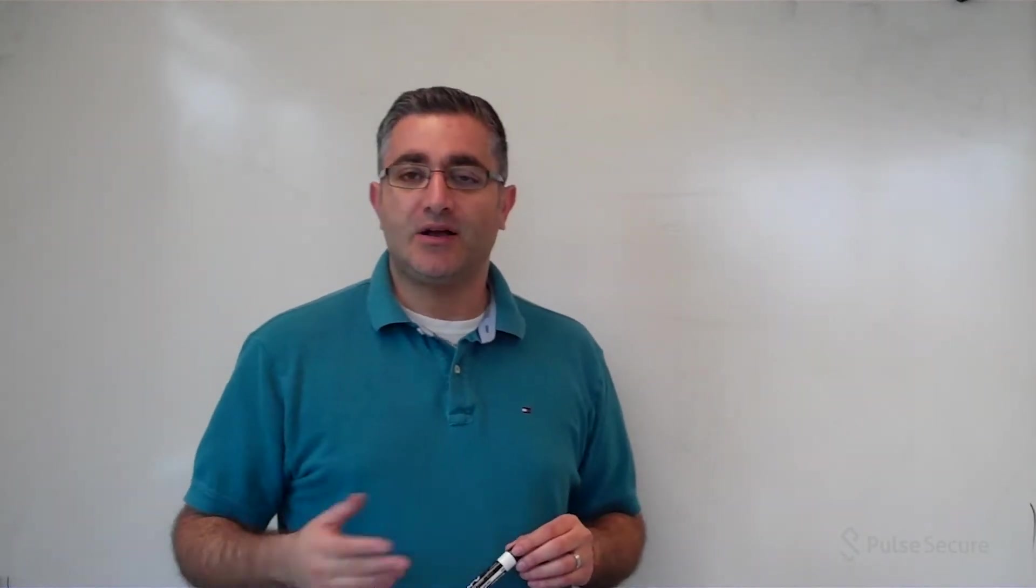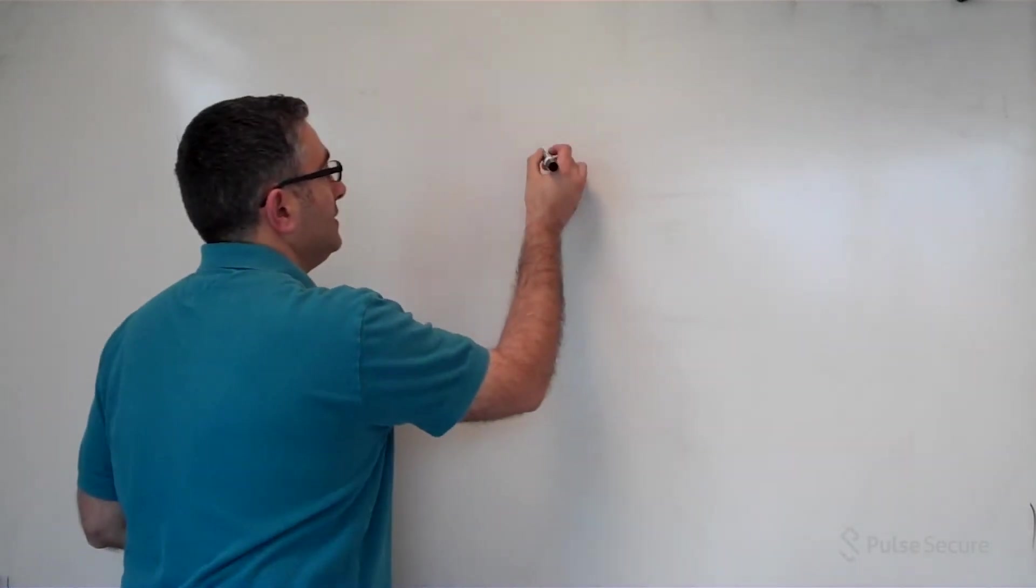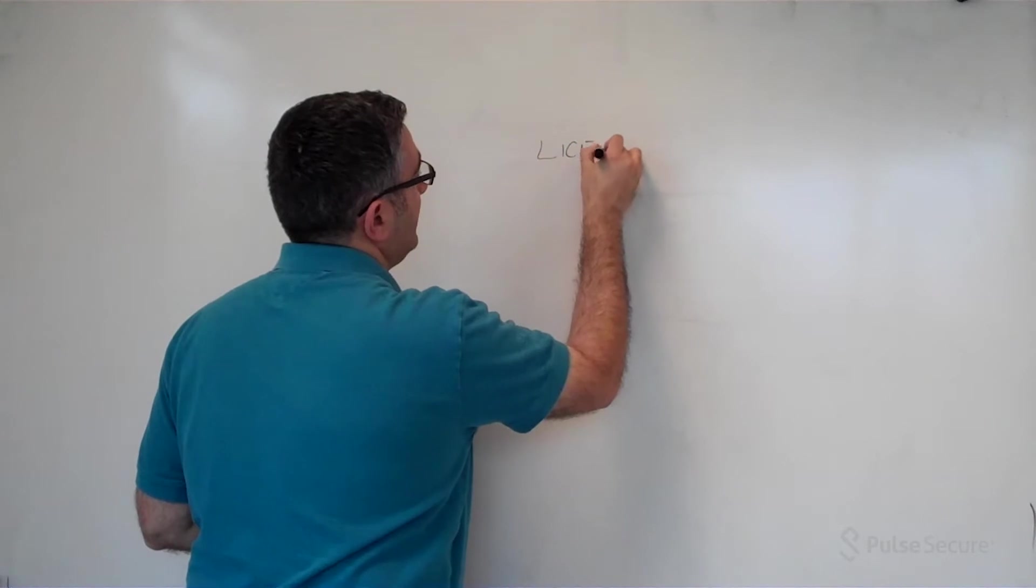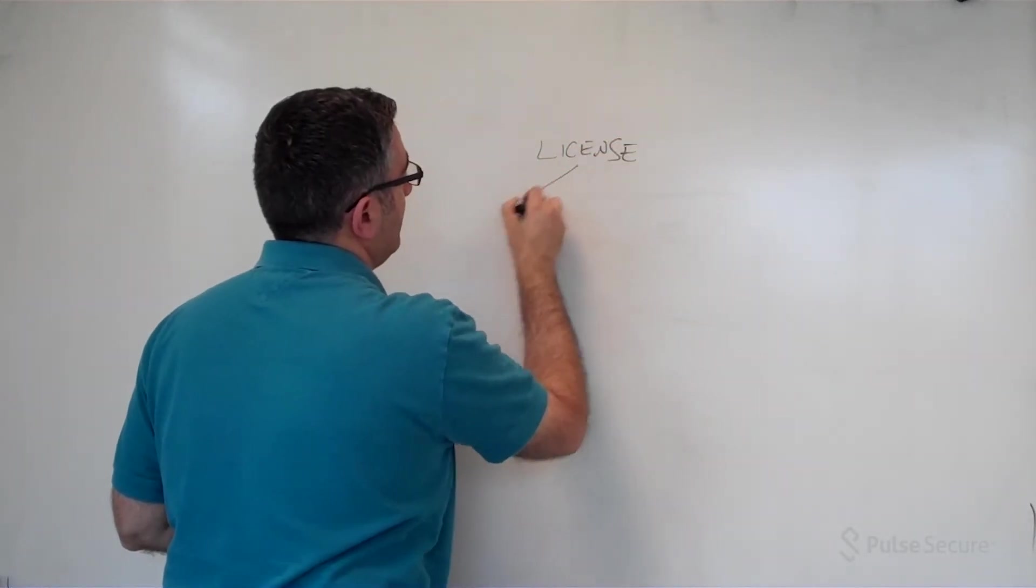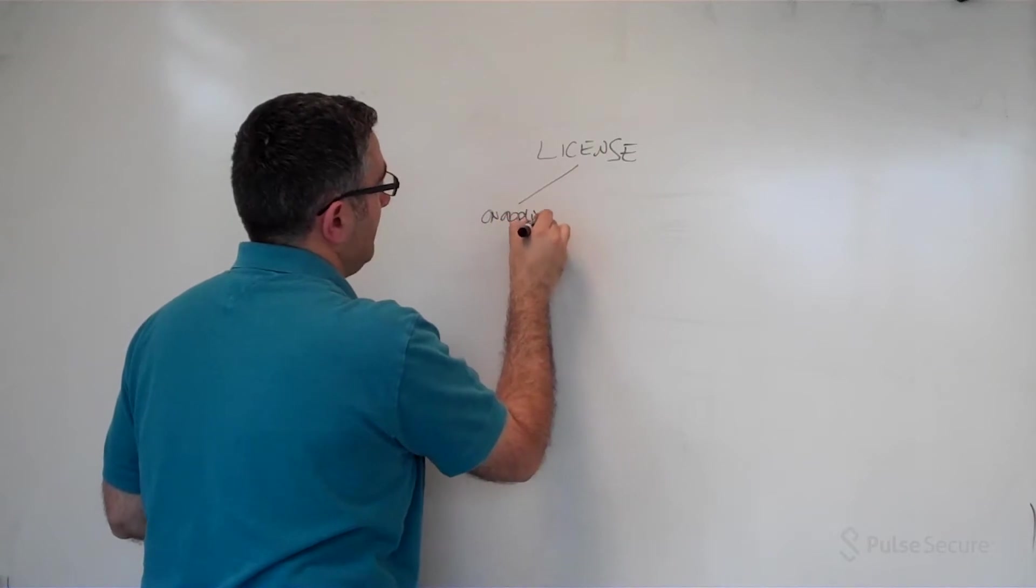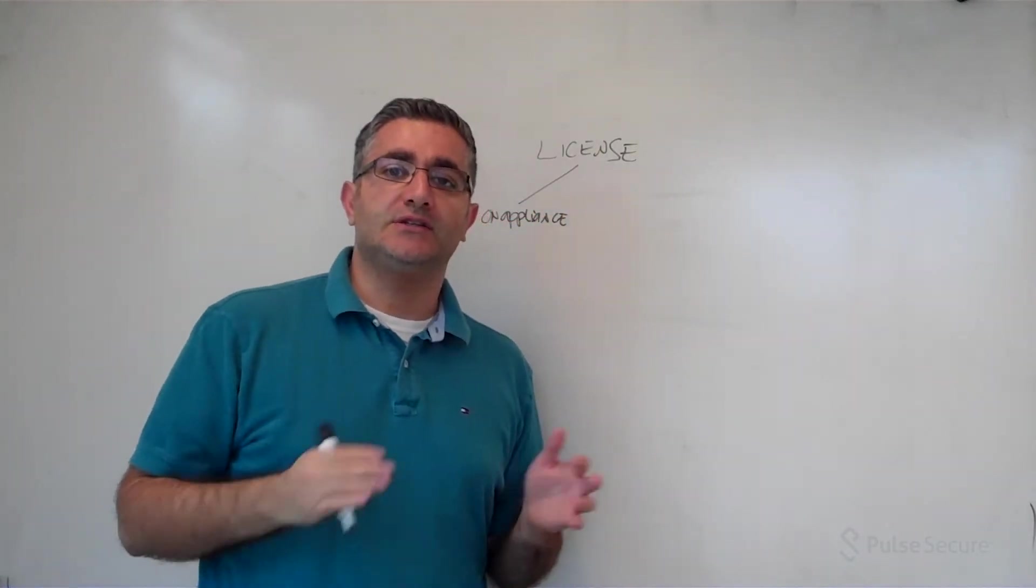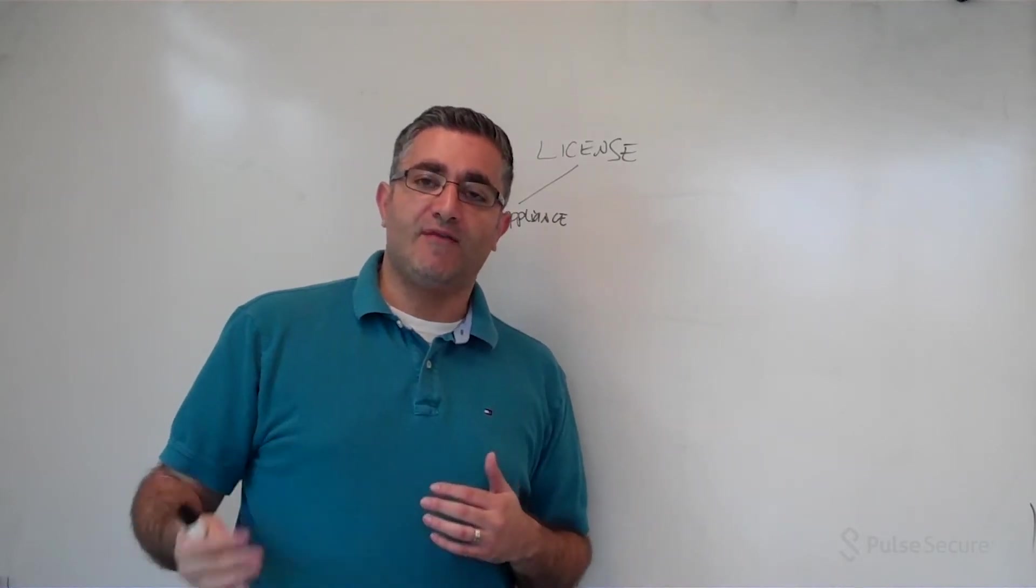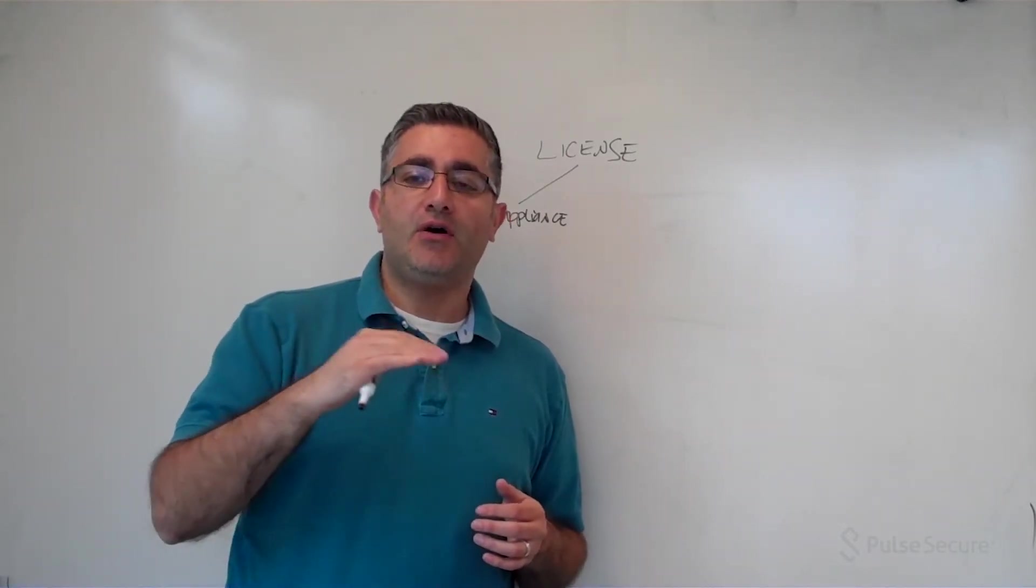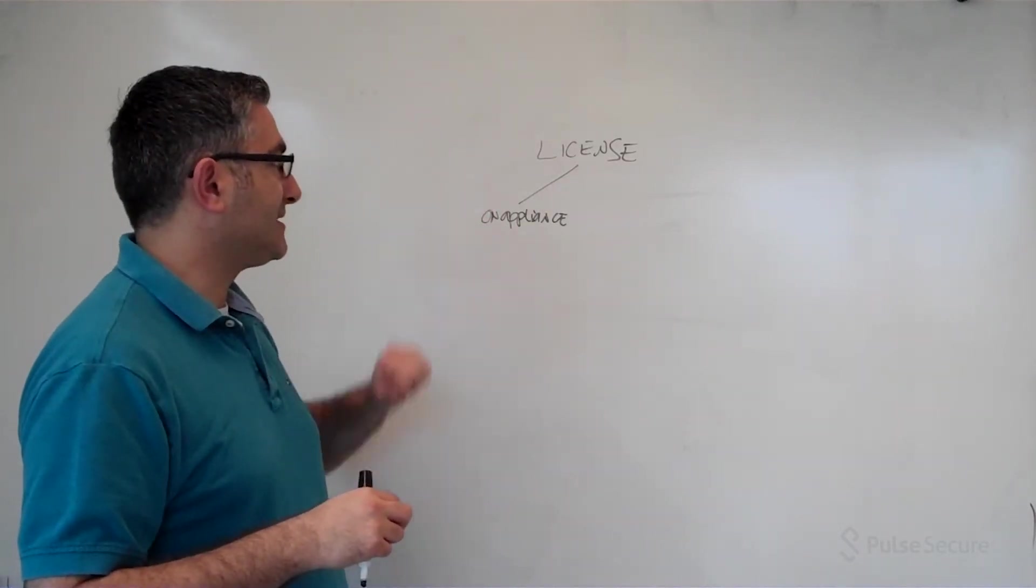When you talk about licensing options for our products, there's two ways you can do licensing. The license can be applied either on the appliance, meaning if you have Connect Secure licenses, they go on Connect Secure. If you have Pulse Secure licenses, they go on Policy Secure, and all the optional licenses will always be on the appliance itself.